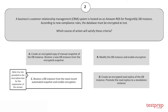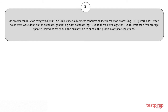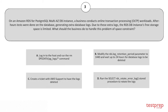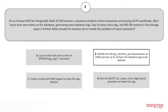Question 3: On an Amazon RDS for PostgreSQL Multi-AZ DB instance, a business conducts online transaction processing workloads. After-hours tests were done on the database generating extra database logs. Due to these extra logs, the RDS DB instance's free storage space is limited. What should the business do to handle this space constraint? Options: A) Log into the host and run the given command. B) Modify the given parameter to 1440 and wait up to 24 hours for database logs to be deleted. C) Create a ticket with AWS Support to have the logs deleted. D) Run the following stored procedure to rotate the logs. The correct answer is option B.